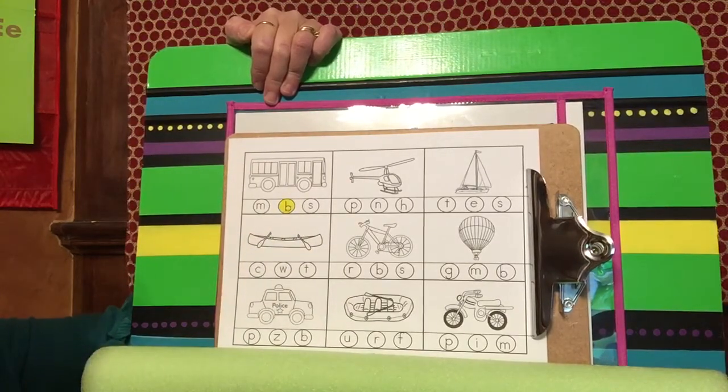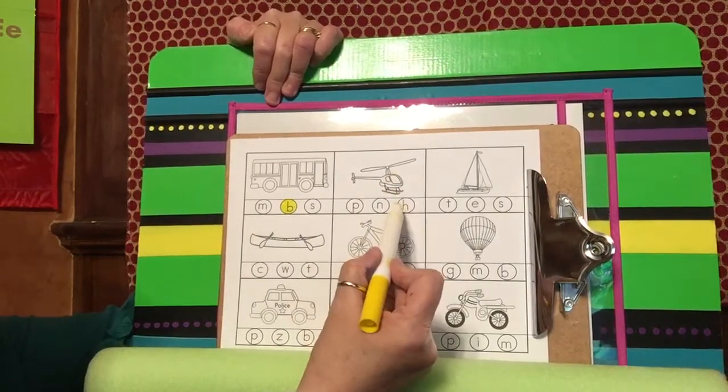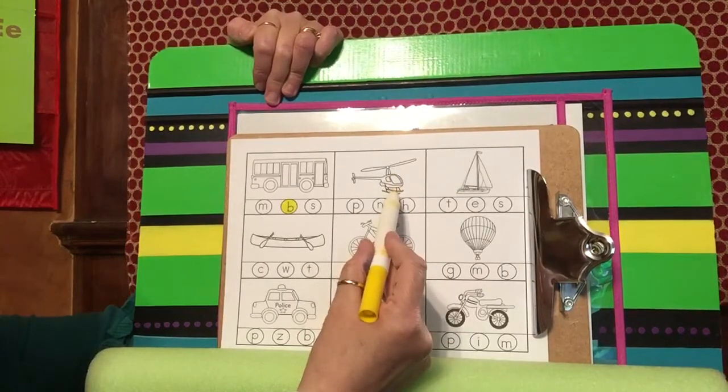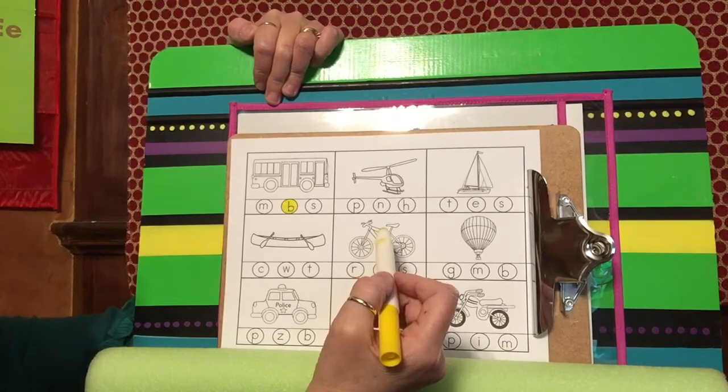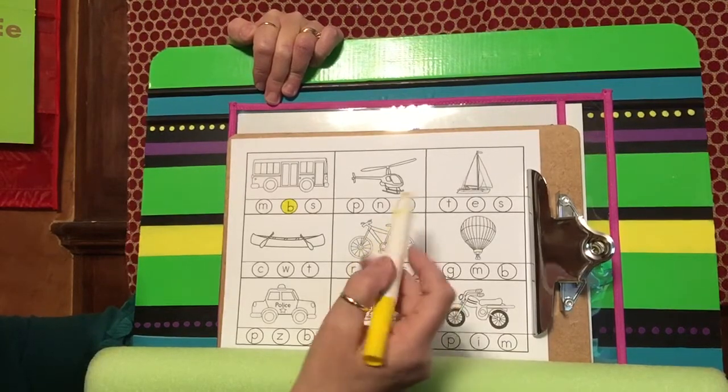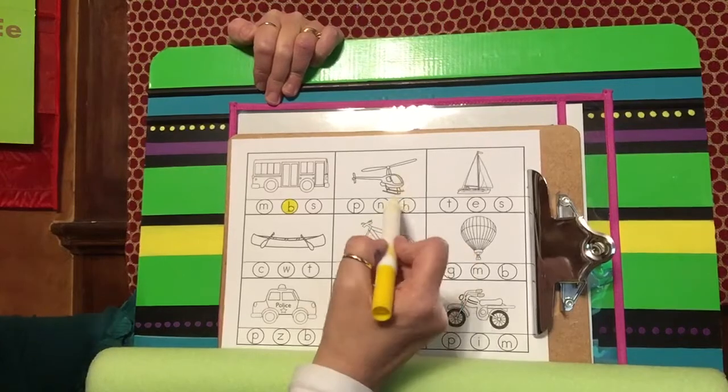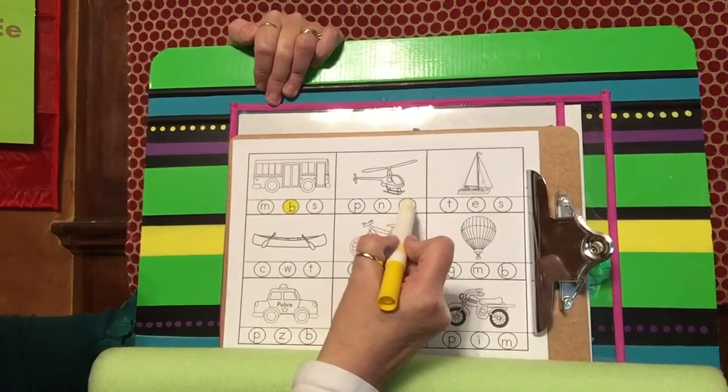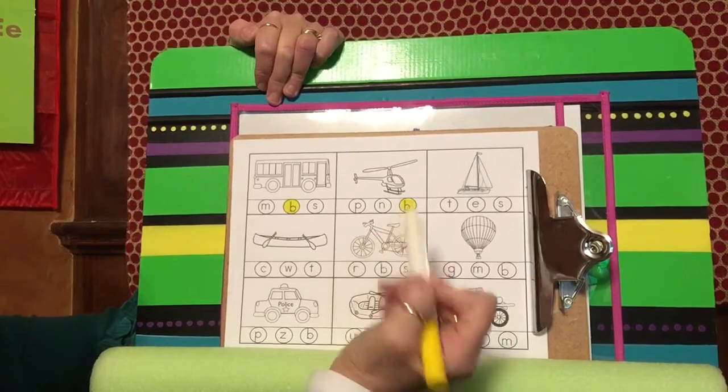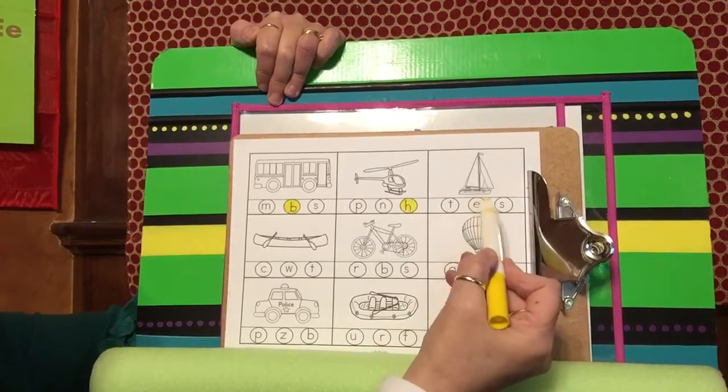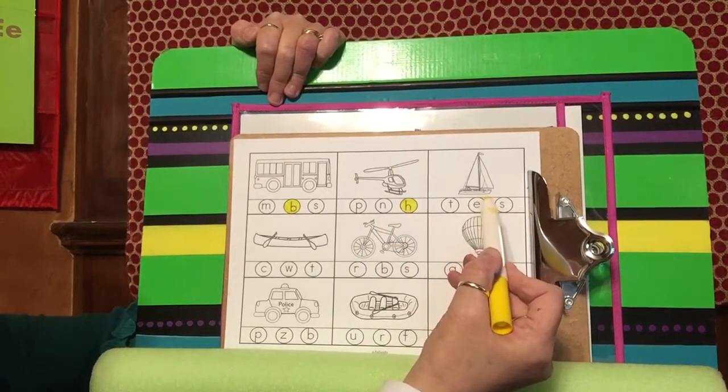Let's try this one. I'm sure you know what that is. That's a helicopter. The sound we hear at the beginning is helicopter, so let's color in that H.